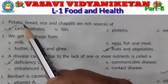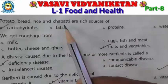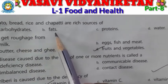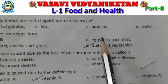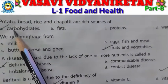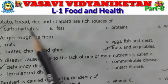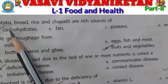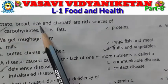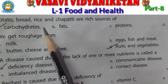Question 2: Potato, bread, rice and chapatis are rich sources of — carbohydrates, fats, proteins, or water? A is the correct answer: carbohydrates. Tick the A answer. Potato, bread, rice and chapatis are rich sources of carbohydrates.